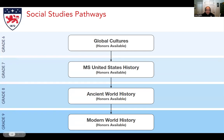It's also a pretty straightforward pathway in middle school. If you're in sixth grade, you'll be enrolled in global cultures. Seventh grade students are enrolled in middle school U.S. history, and eighth grade students are enrolled in ancient world history, leading to high school modern world history in the ninth grade.